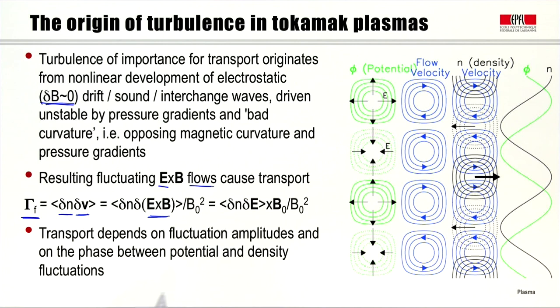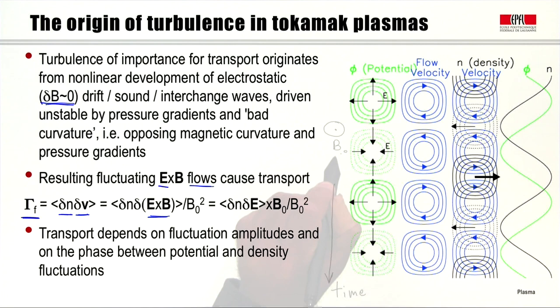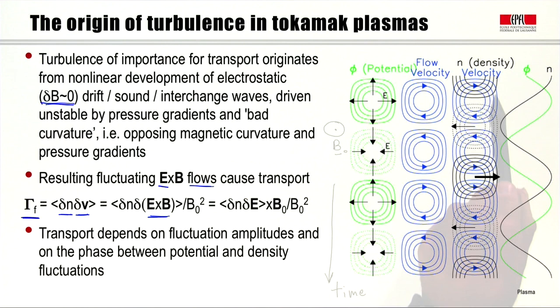Transport depends on the fluctuation amplitude and also on the phase between the potential and density fluctuations. A picture illustrates the case for a single mode, showing potential oscillations as a function of time, with a magnetic field B₀ coming out of the board. The perturbed potential or electric field causes a perturbation in the velocity — the flow velocity — which circulates in eddies associated with the potential wave structures. The density fluctuations are also present, and the key point is their phase relative to the flow velocity fluctuations.